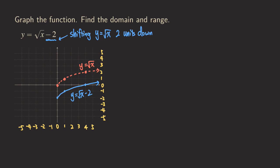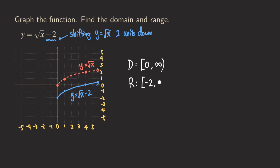And now we just need to find the domain and the range. The domain, as you can see, is the same as our parent function, so it's starting from zero with the bracket, and then to infinity. And for the range, because our y values are different, the lowest point for the graph has a y value of negative two. So we are going to start at negative two, and then it will just keep going up forever, so we get infinity for this. So that's it for all three examples. We are going to do a more complicated example next time, so please stay tuned. Please also share and subscribe to this channel. I will see you next time.